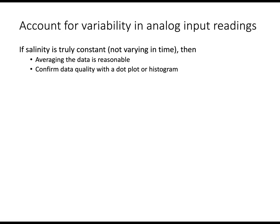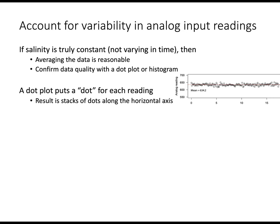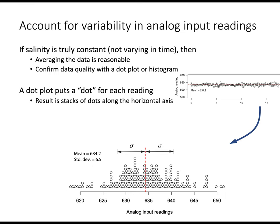If the salinity is truly constant, then averaging is reasonable. But we want to look at it with a dot plot or a histogram. Here's our original signal readings as a function of time. And I'm going to show you this new representation called a dot plot here at the bottom of the screen. Each of the readings from the time varying signal has a value associated with it. And each of those values is represented in the bottom diagram by an individual circle. So each time, say, 630 is occurring in this stream of variables, we put a dot on the 630 location. And we stack up these dots as the individual readings accumulate.